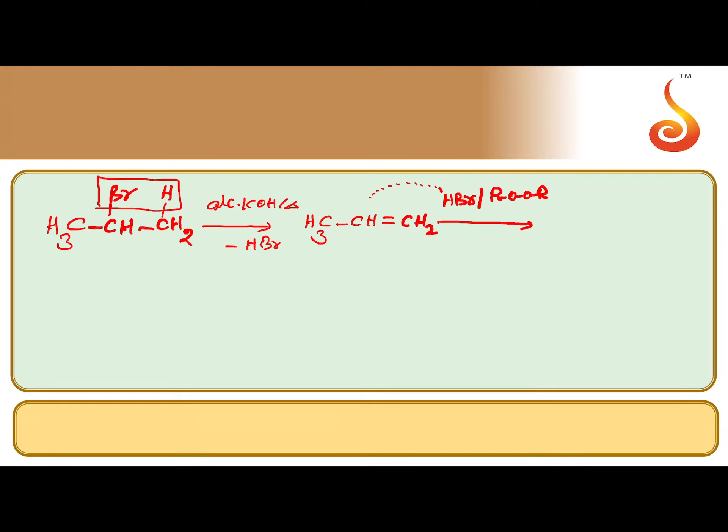H goes to carbon with less number of hydrogens. Bromine goes to doubly bonded carbon with more number of hydrogens. Then we get CH3CH2CH2Br. Simply, isopropyl bromide is converted into n-propyl bromide.